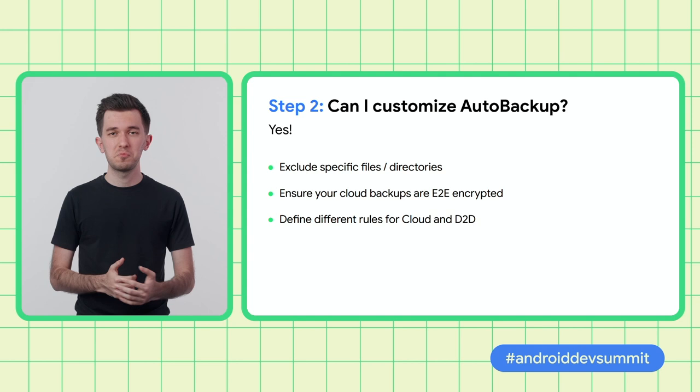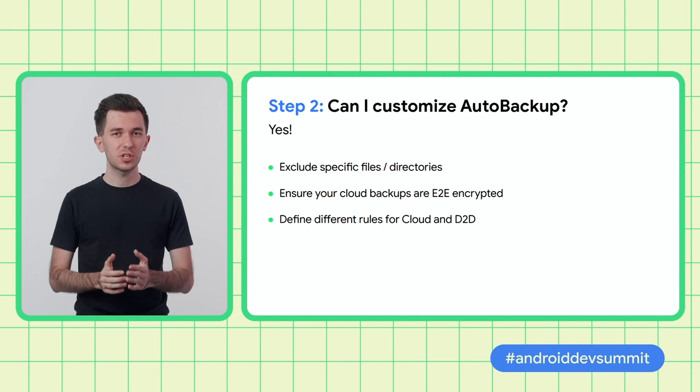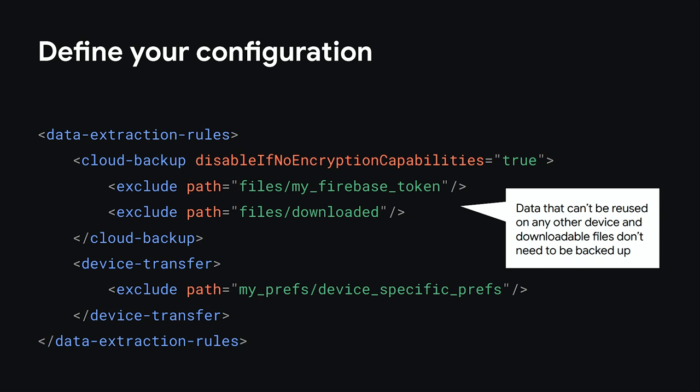Assuming that you are happy with auto-backup, let's see what kind of customizations you could make to the default behavior. You can set rules on what files or directories should be included in the cloud backup or device transfer. You can also say that you want cloud backups only if the device supports end-to-end encryption. To do all of that, you just need to create an XML file with your configuration. The config contains two sections — one for cloud backups and one for device transfers. Inside each section, you can put rules on what files or directories to exclude or include. In our example, we excluded our Firebase push token from the cloud backup because it won't work on any other device. It makes sense to exclude data that can't be reused outside of this particular device. We also excluded a large downloadable file — if data can easily be re-downloaded from somewhere, there is no point in including it in the cloud backup.